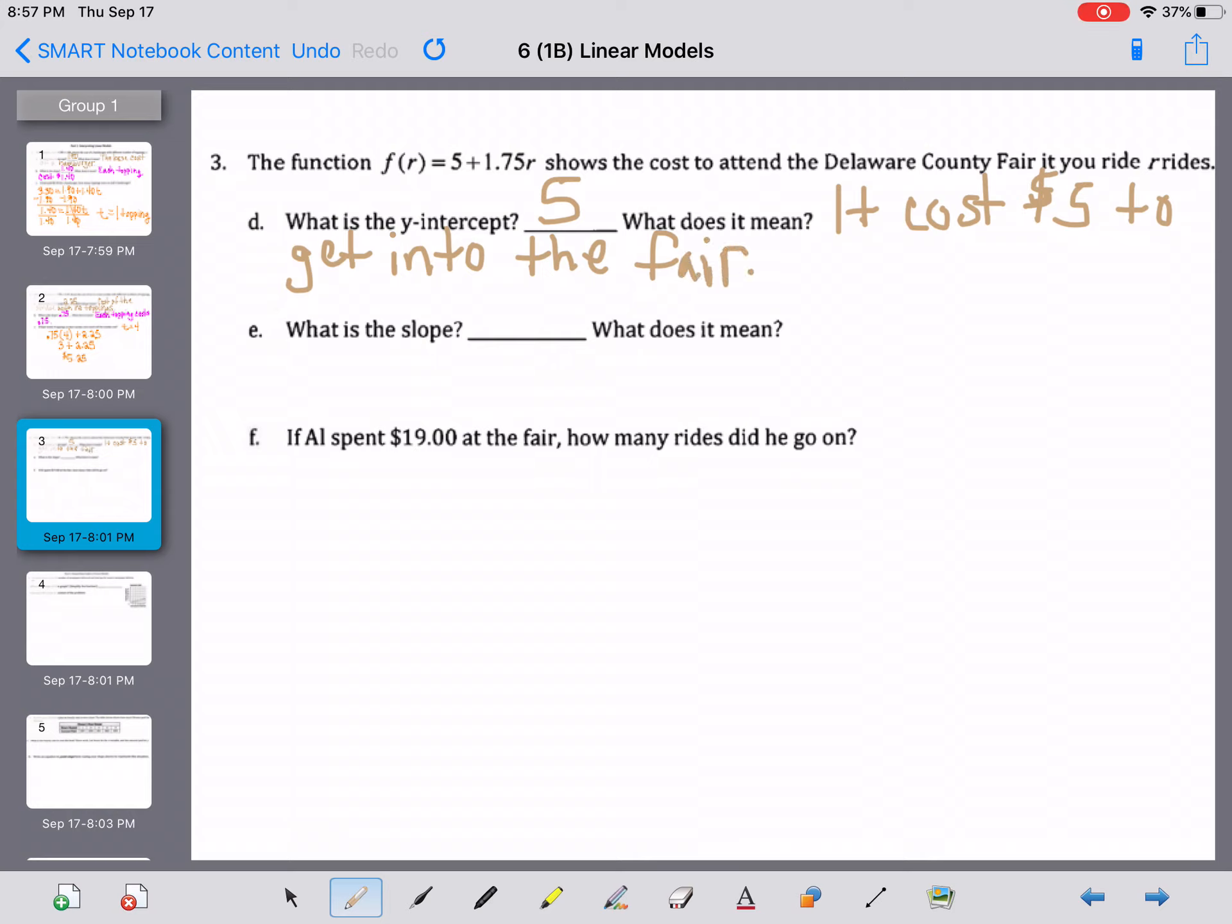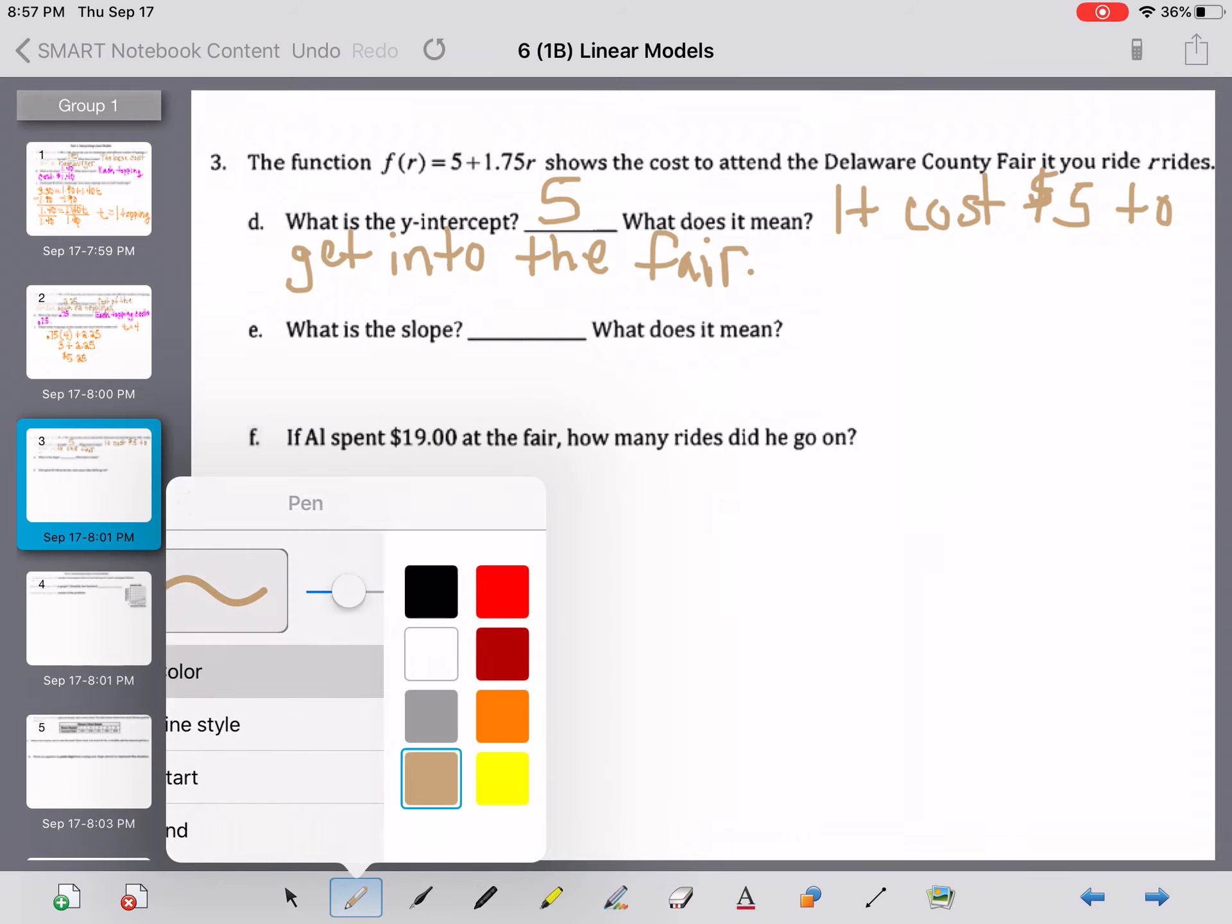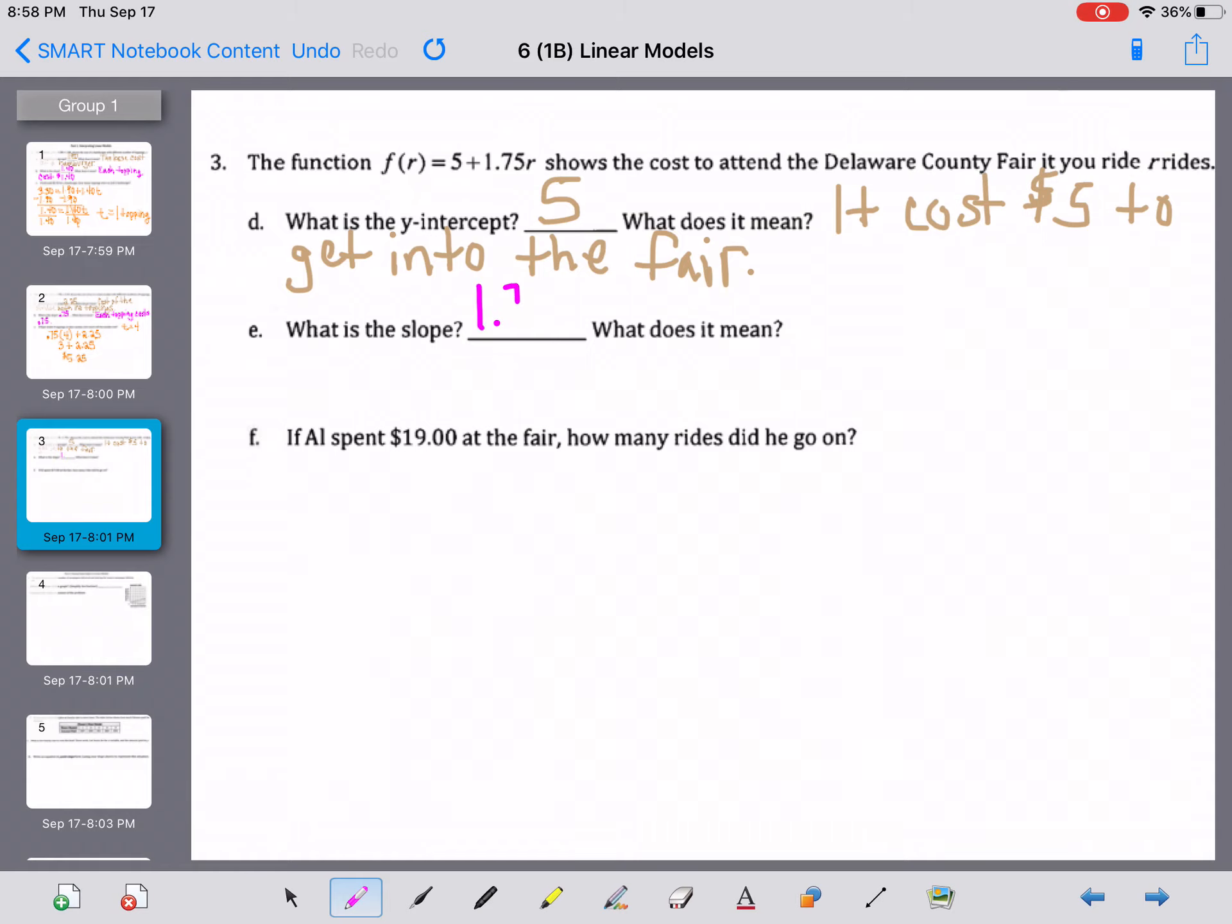What is the slope? The slope is going to be our 1.75, that number in front of the r. And what that means is that each ride cost $1.75.